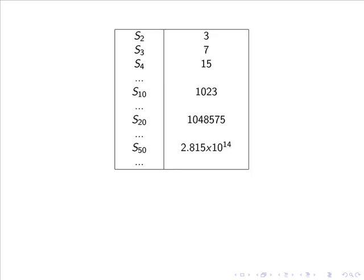So we have S₂ is 3, S₃ is 7, S₄ is 15, S₁₀ is over a thousand, S₂₀ is over a million, and S₅₀ is 2.8 × 10¹⁴.